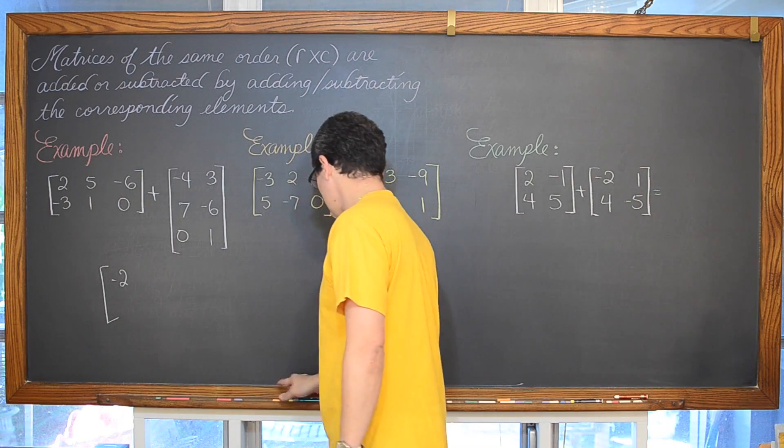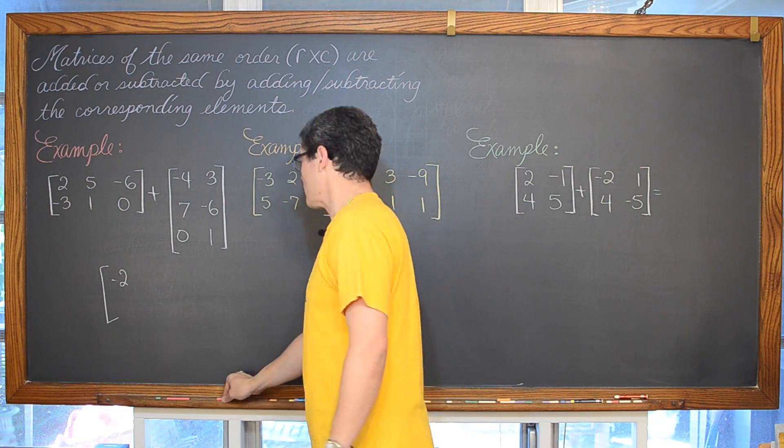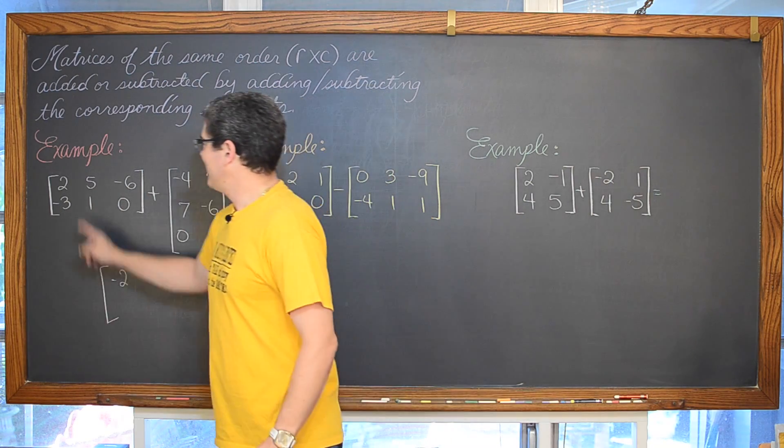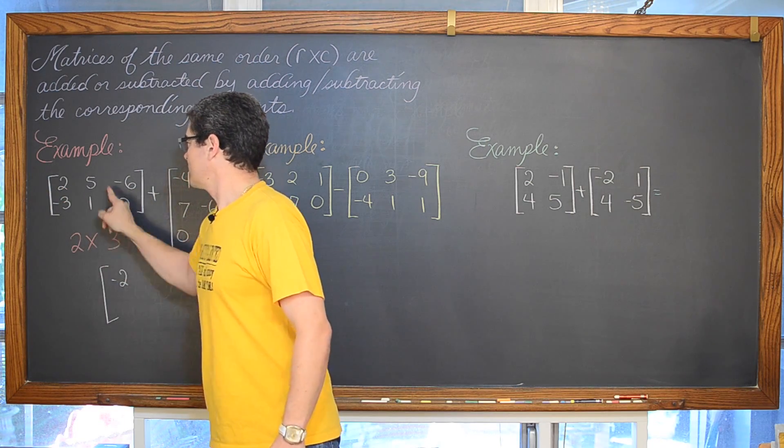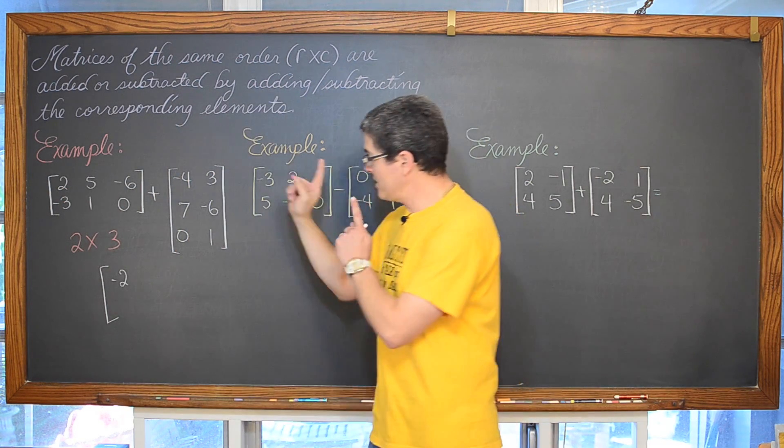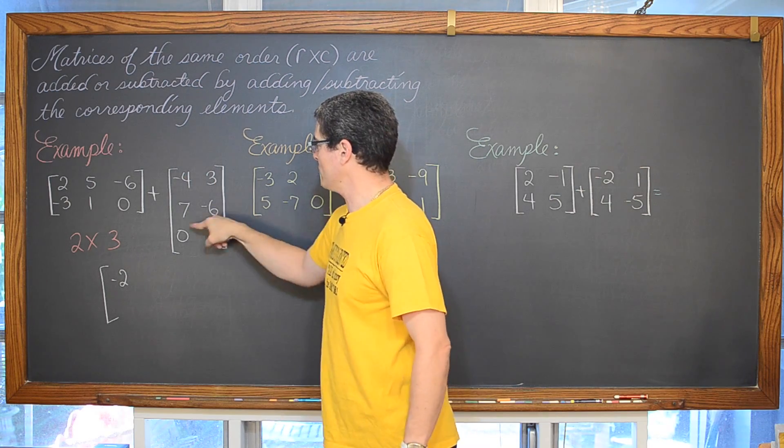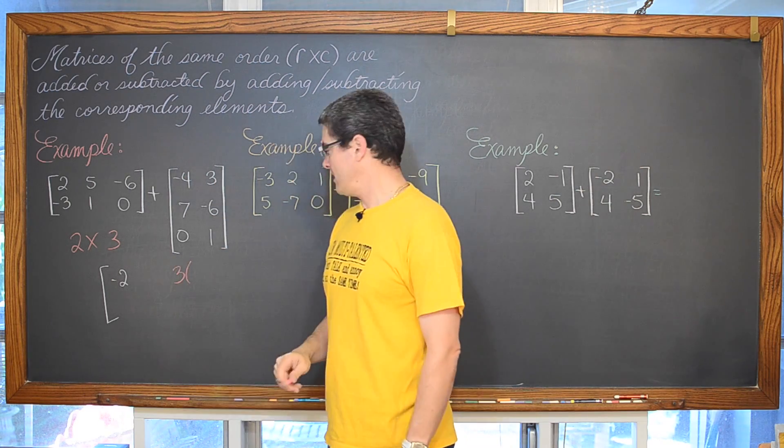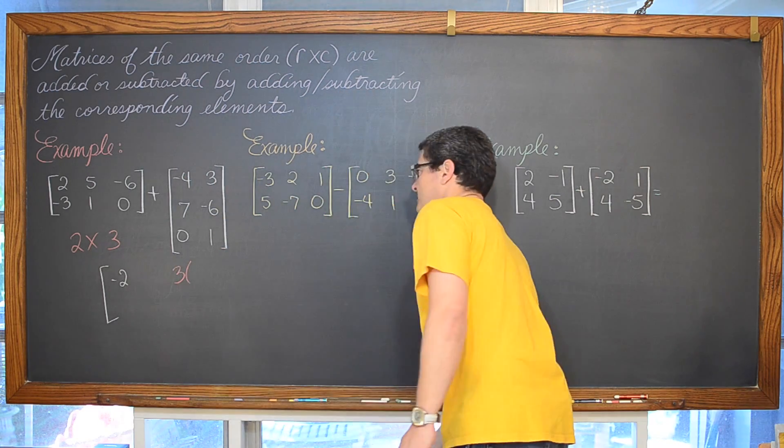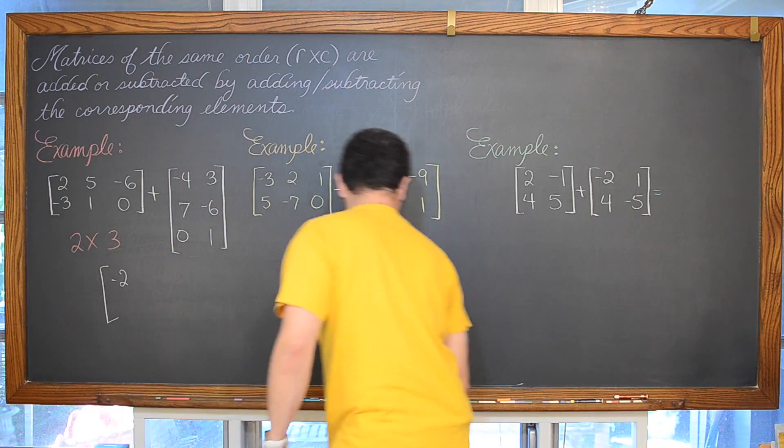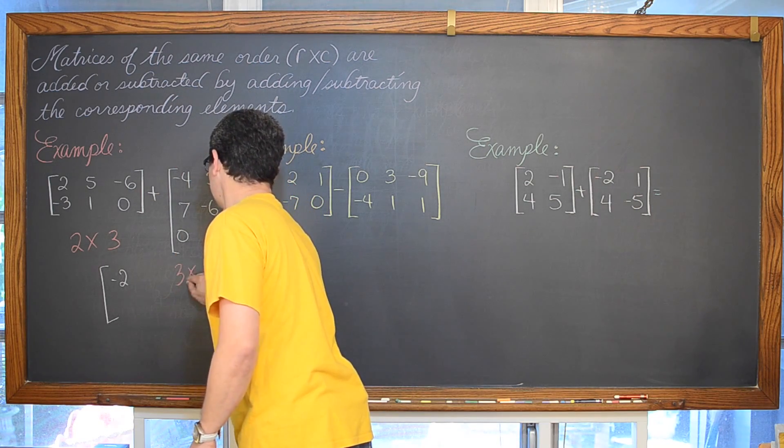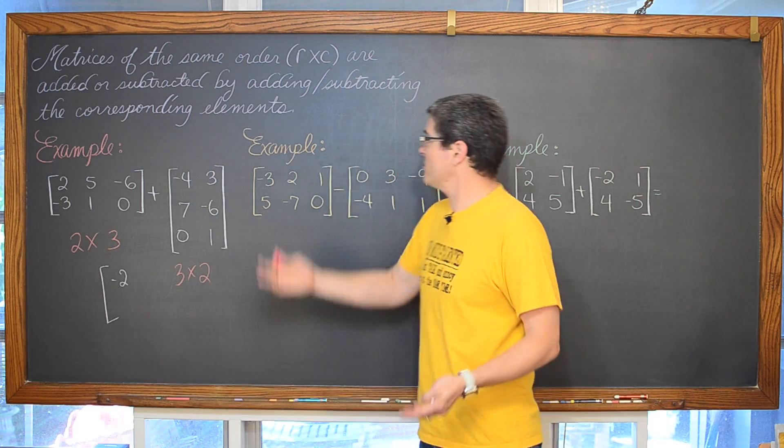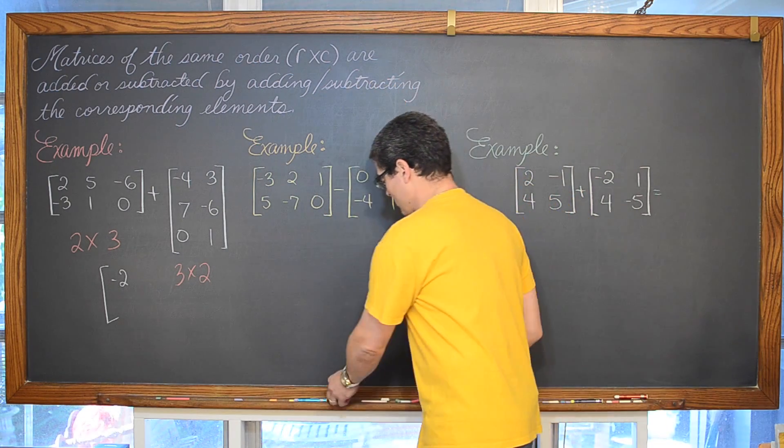This is a two row, three column matrix. This one is going to be a three row and two column matrix. You can't add those, I just said, they have to be of the same order.